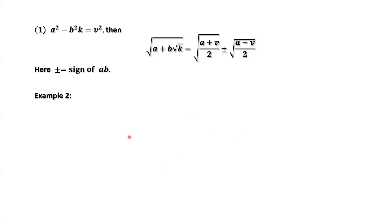Check another example. Here a equals 5, b equals 1, k equals 21. Check this condition to find v squared. We find this equals 4, which equals 2 squared. This implies v equals 2.